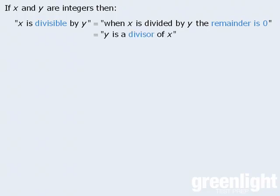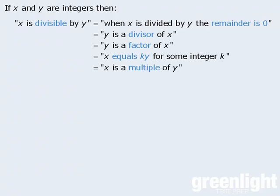Another way to say this is y is a divisor of x. Or we can say that y is a factor of x. Or we can say that x is equal to ky for some integer k. Or we can say that x is a multiple of y. All of these statements convey the exact same idea. So be sure to know all of the various ways to express the idea that one number is divisible by another number. Later in this module, we'll add even more statements to this list.